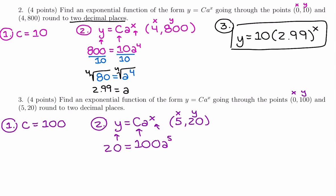So this one looks different. Last time we went from 0, 10 to 4, 800, so we knew it was growing. Versus this one had 0, 100 and it went 5, 20, so it went down. So we should get a decay factor here instead of a growth factor. So it should be less than 1.